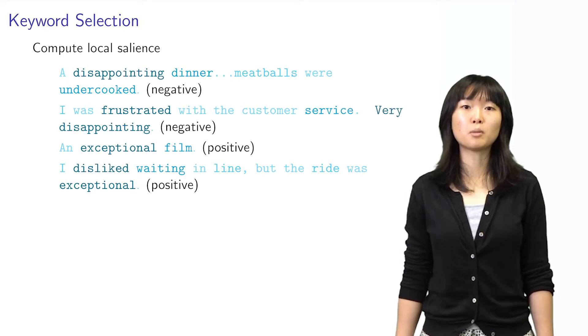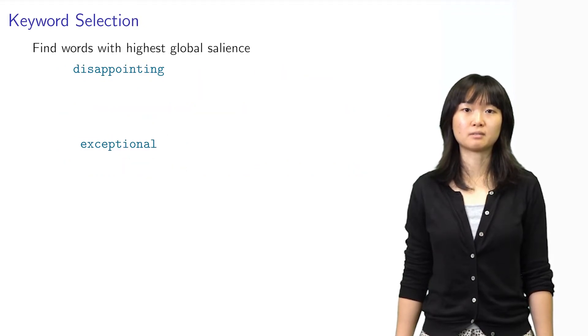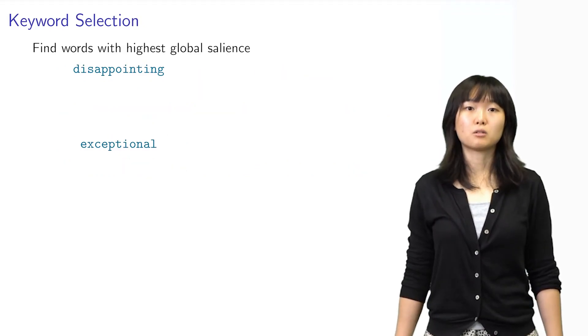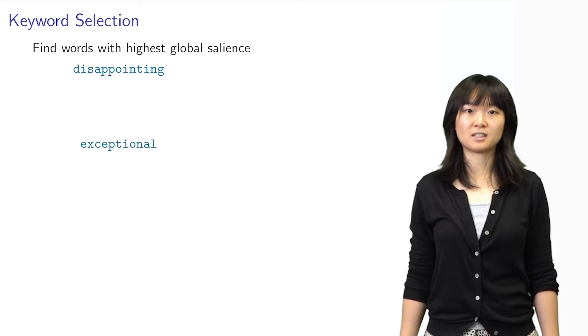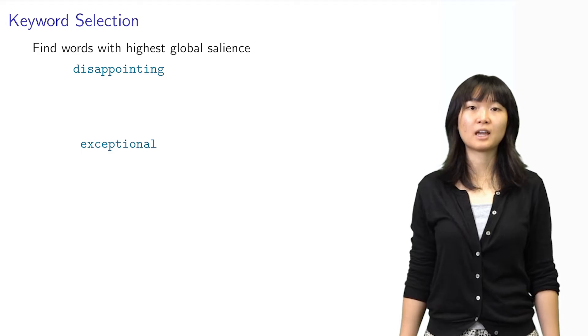To compute global salience, we sum up the local salience scores and discount them by inverse document frequency. In this example, we want to pick two keywords. So, we pick the two words with high salience, which are disappointing and exceptional.